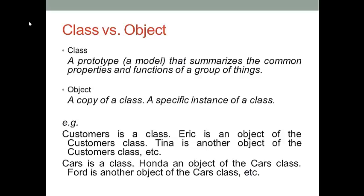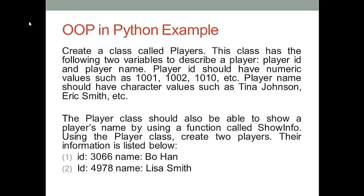I want to use an example to show everyone how to implement object-oriented programming in Python. We want to create a class called Players. This class has the following two variables to describe a player: each player should have an ID number and a name. Player ID should have numerical values such as 1001, 1002, 1010, and so on. Player name should have character values such as Tina Johnson, Eric Smith, and so on.